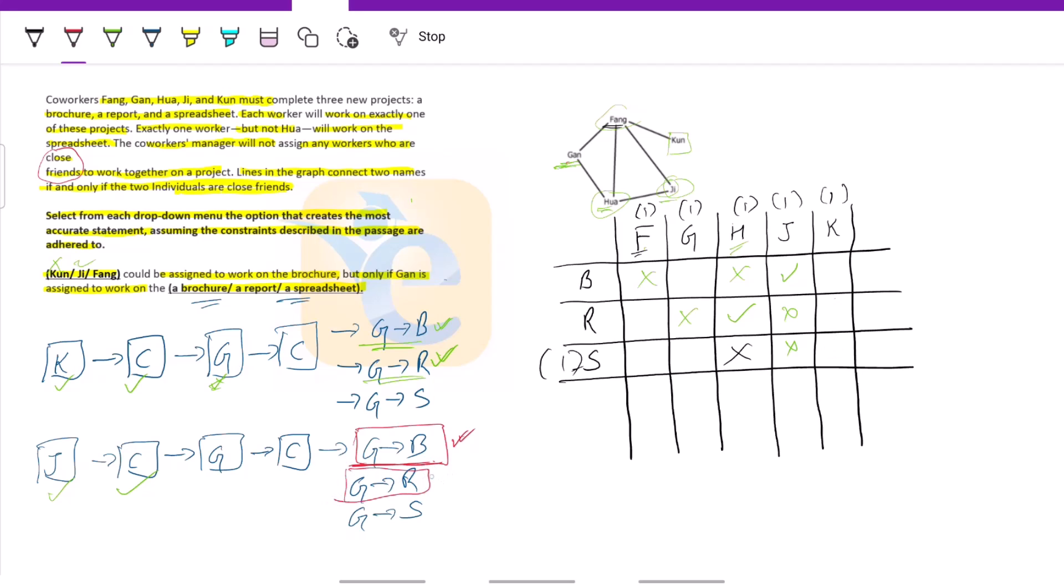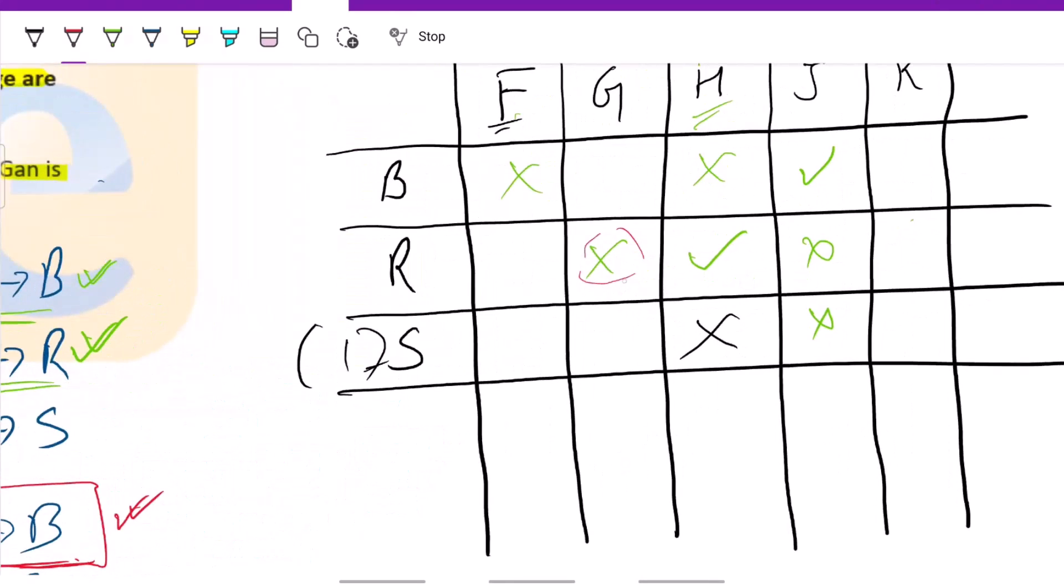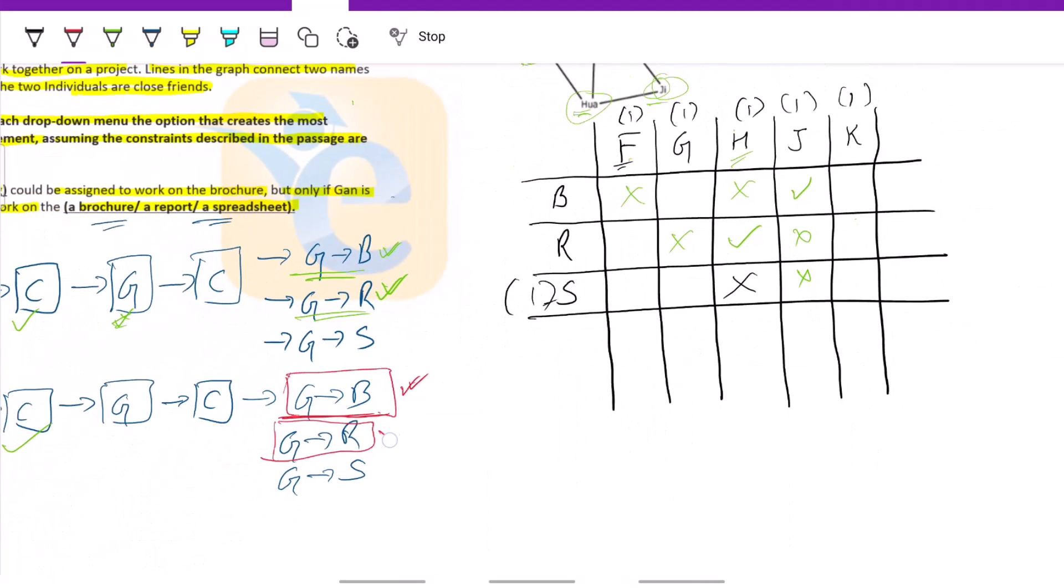Now, let's put G on report. Now, as you could see, G cannot be put on report. So a condition gets violated here already. So this cannot be here.